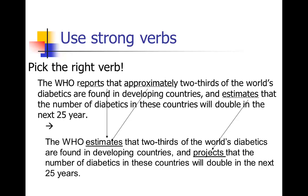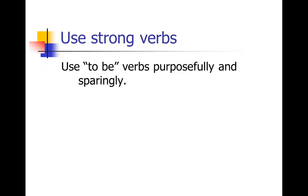Really pay attention to picking the right verbs. Use a thesaurus to help find the absolute best verb you can. When you want to use strong verbs, that means using the 'to be' verbs — is, are, was, were, be, been, and am — as purposefully and sparingly as you can. Of course you can't avoid them entirely; they're going to come up a lot. The problem is that in a lot of writing, it's like every sentence has a 'to be' verb. I'm going to ask you to go through your writing, underline all your verbs, and see how often you use 'to be' verbs. Try to reduce that number. Sometimes you'll have to use them, but use them purposefully and sparingly.